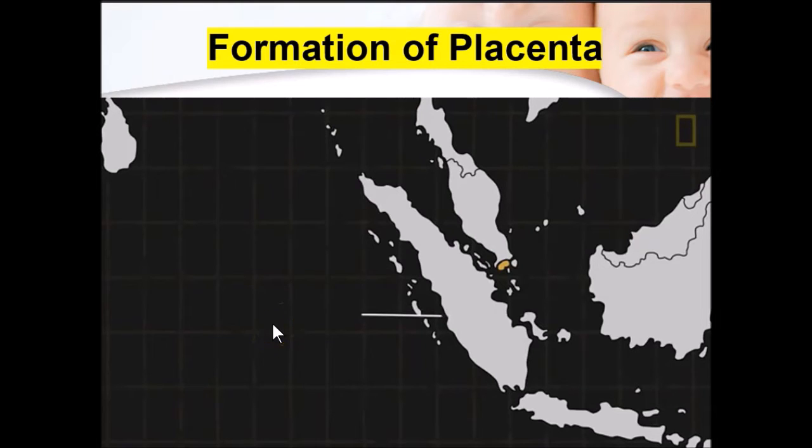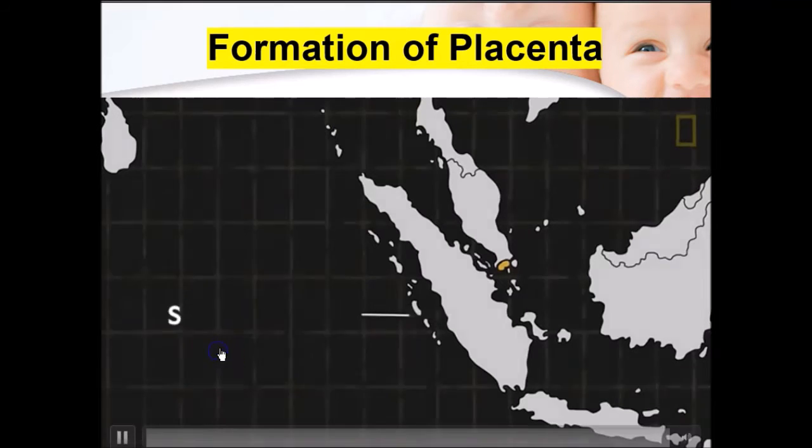Before we get into the details, let's watch this short three-and-a-half minute video. It's very interesting — it shows you how you are formed, what parts develop throughout your nine months of pregnancy, and you will see the features of the placenta and the umbilical cord much more clearly.